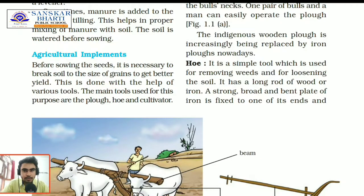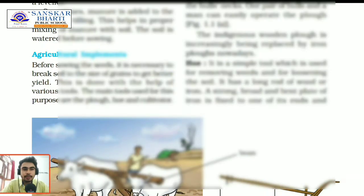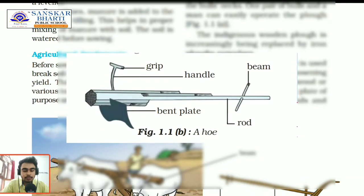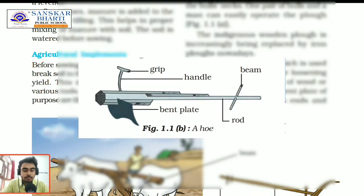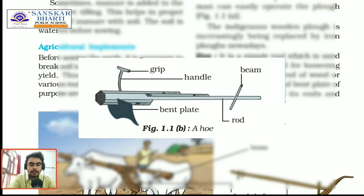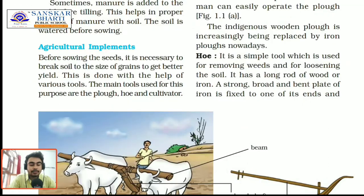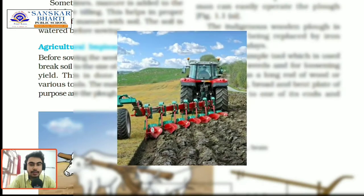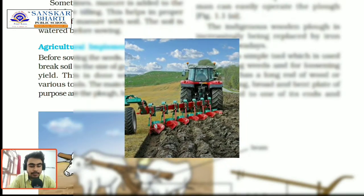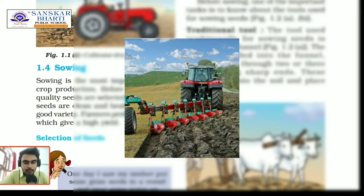A hoe is a simple tool used for removing weeds and for loosening the soil. It is a broad, strong, bent plate made up of iron that works like a blade. Cultivators are an advanced form of the plow driven by tractors; they are more efficient and save both labor and time.